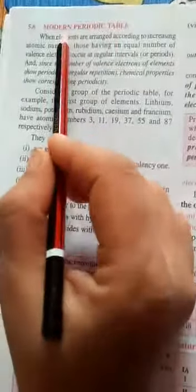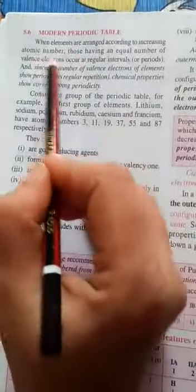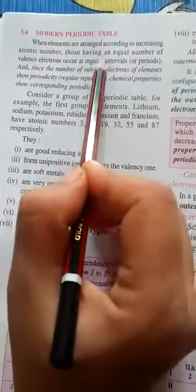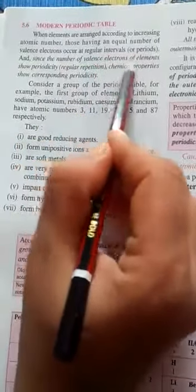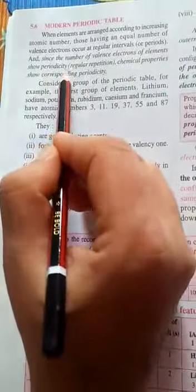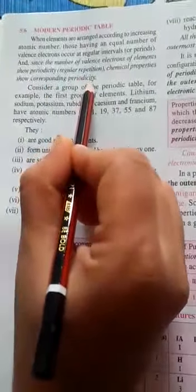Good morning students, 9th class chemistry chapter number 5, continuing with our topic Modern Periodic Table. When elements are arranged according to increasing atomic number, those having an equal number of valence electrons occur at a regular interval or period. Since the number of valence electrons of elements showing periodicity, regular repetition, chemical properties show corresponding periodicity.